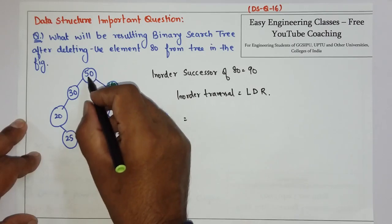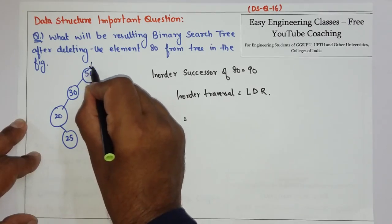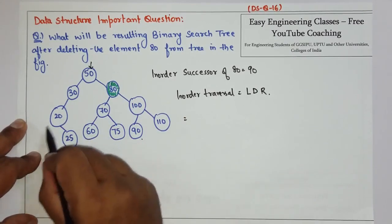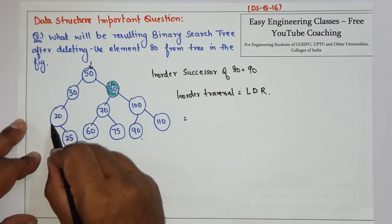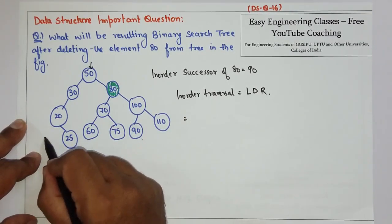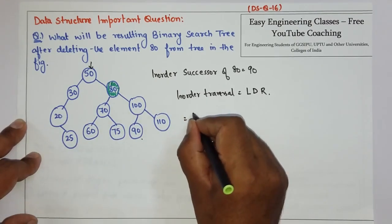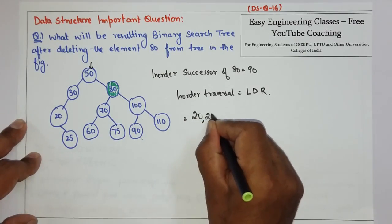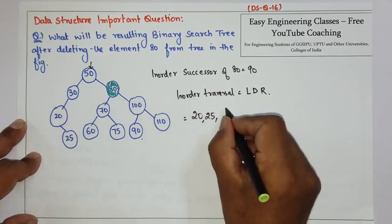So now let's see. This is the starting node, so we come to the left part first. This is node 20 and there is no item on the left, so first we will write 20, then 25, 30,